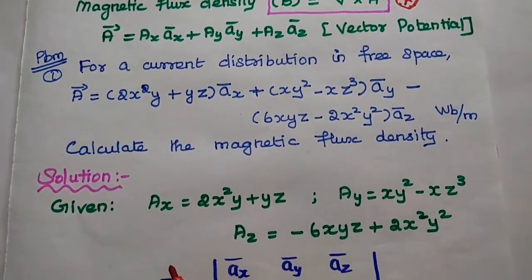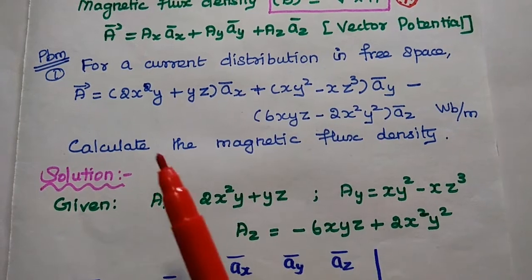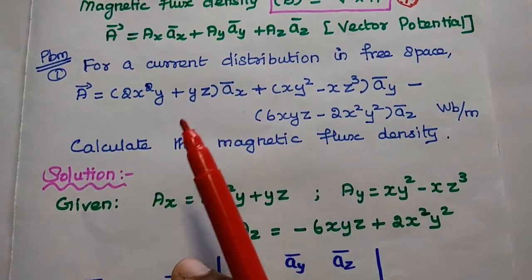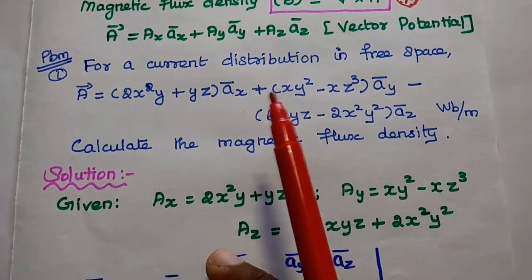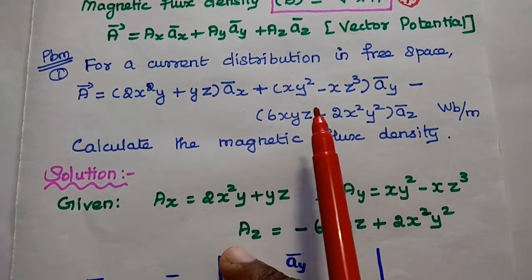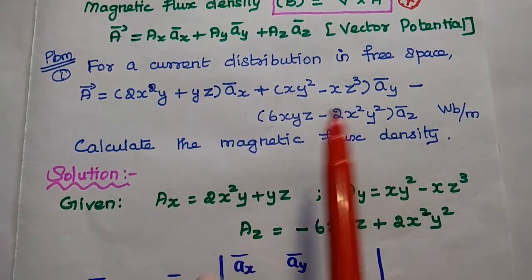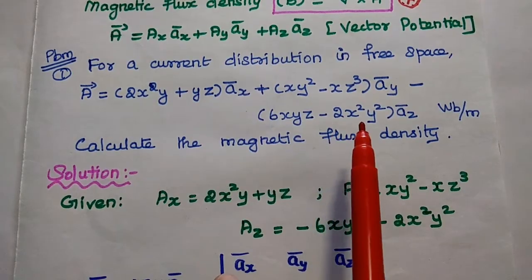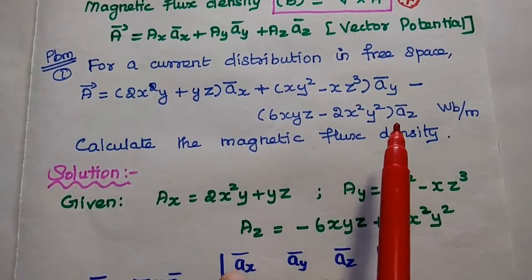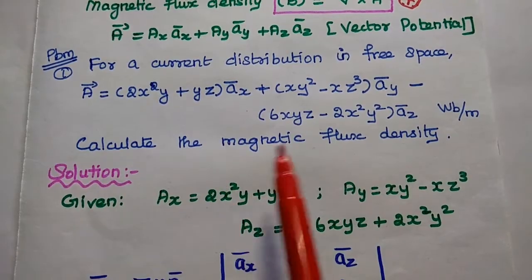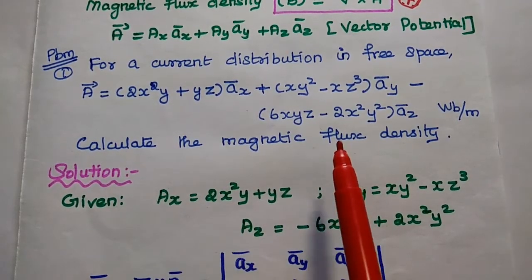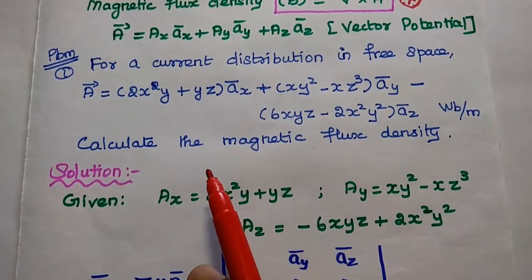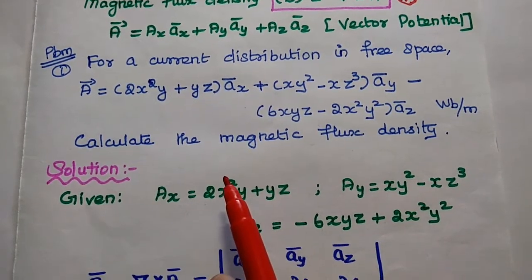For the first problem, for a current distribution in free space, the vector potential A vector is equal to (2x²y + yz)ax̄ + (xy² − xz³)ay̅ − (6xyz − 2x²y²)az̅ Weber per meter. Calculate the magnetic flux density. In this problem, the vector potential is given and we are going to find out the magnetic flux density.